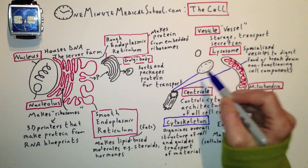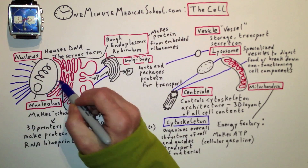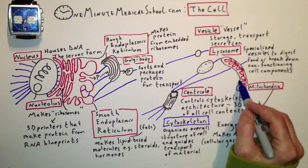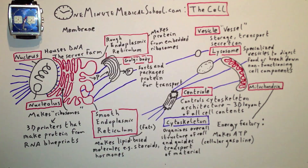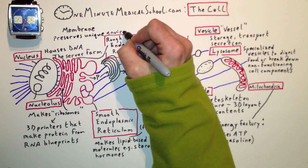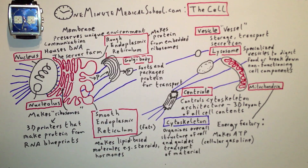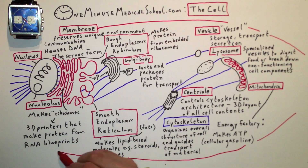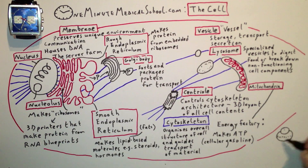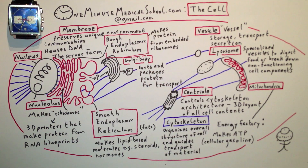The cytoskeleton organizes the overall structure of the cell and guides the transportation of material. Finally, the membrane preserves the unique environment of the cell and mediates communication externally.